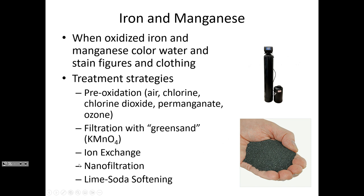Iron and manganese can also be removed by nanofiltration and reverse osmosis, because those ions are too large to pass through the very small pores of a nanofiltration membrane. Lime soda softening is another process that could remove iron and manganese, since they would simply precipitate during that process and be removed along with the calcium and magnesium.